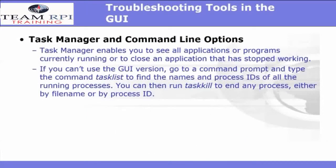The Windows Task Manager enables you to see all applications or programs currently running, or to close an application that has stopped working properly. If for whatever reason you can't use the GUI version, you can always go into the command line and type tasklist to find the names of process IDs of all the running processes. You can then run taskkill to end any process, either by file name or process ID.